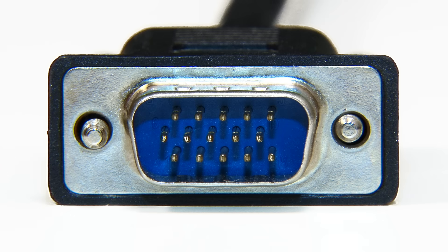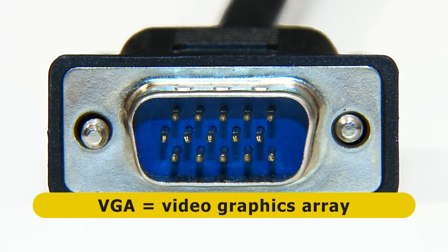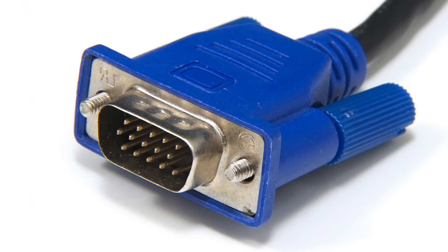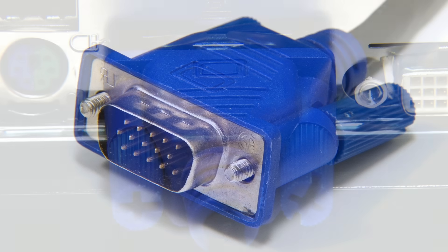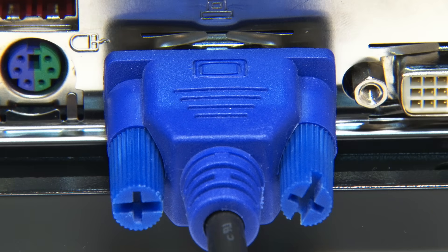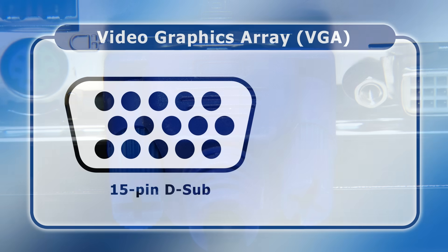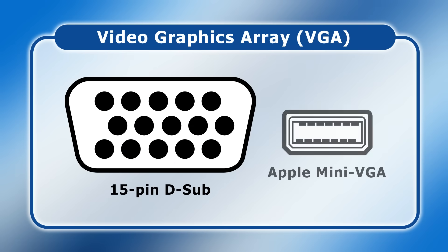The oldest computer display connector in common use is the Video Graphics Array, or VGA. Introduced by IBM in 1987, this uses a standard 15-pin D-shaped sub-miniature or D-sub connector. These are sometimes color-coded blue and usually feature two screws to ensure a robust connection. However, Apple, HP, Samsung, and ASUS did once make their own proprietary mini VGA connectors for use on some of their laptops.